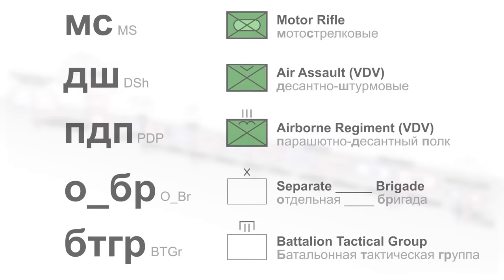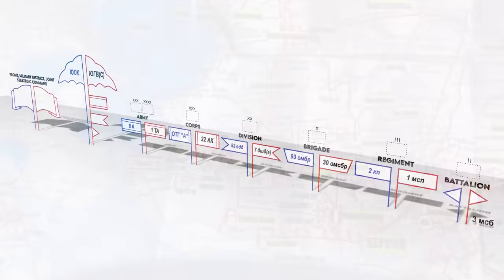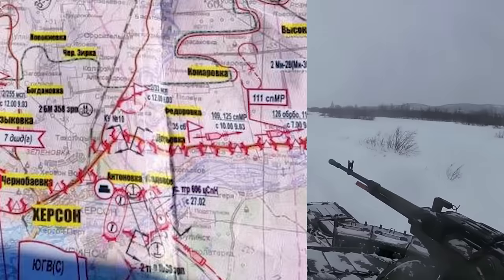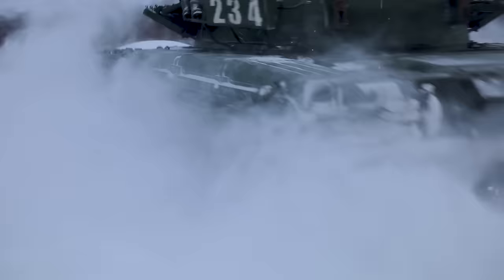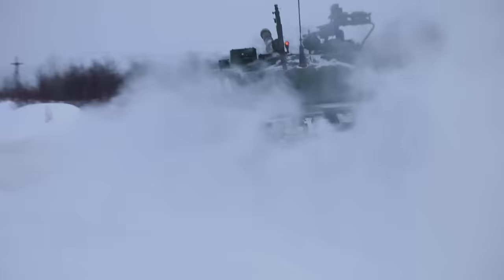When stationary, these flags don't really represent what kind of unit they are, only its size. To understand what kind of unit it is, you have to look at the smaller units. Units from battalions all the way down to a single squad can be depicted by the type of vehicle or weapon system they employ.